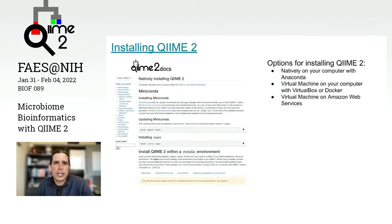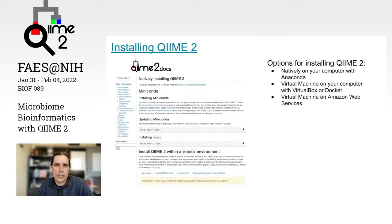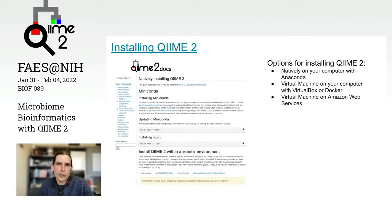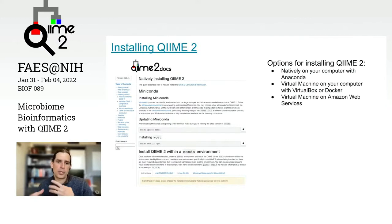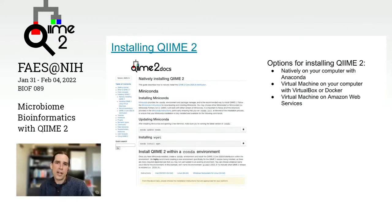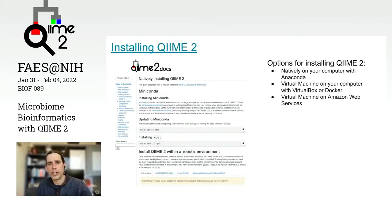QIIME 2 can be installed in a number of different ways — natively on your Mac, Windows, or Linux computer, using virtual machines, or on Amazon Web Services. Whether you have a server in the lab, a laptop, a cluster at your institution, or none of those resources, there are ways for you to use QIIME 2 regardless of what your computing infrastructure looks like.